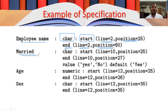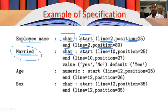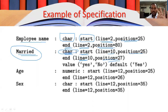The second field is whether the employee is married or not. The field name is 'married or not', data type character, starting at line number 10, position 25, ending on the same line at position 27. So three characters are accepted: 'yes' requires three characters and 'no' requires two characters.